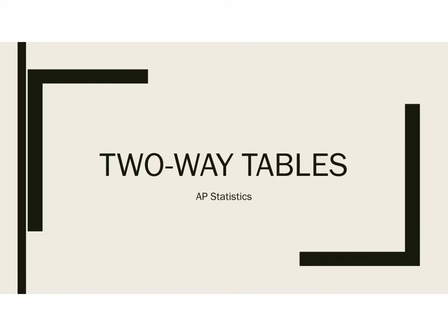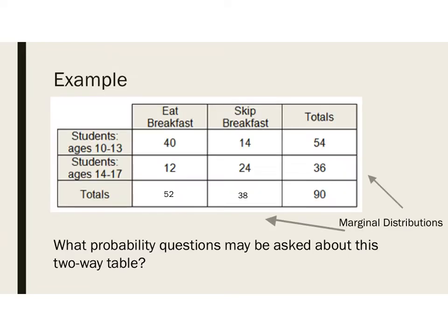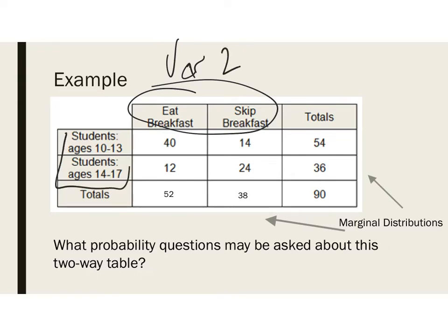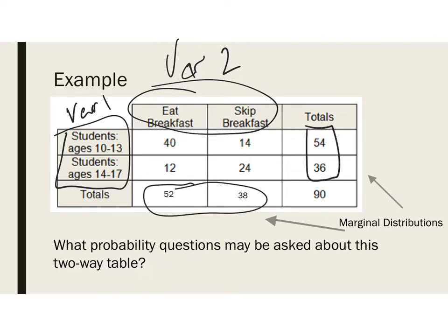Hello again statisticians, back with the second probability lesson — this one's on two-way tables, also known as contingency tables. They look like this, with variable one and variable two. The student's age would technically be the X, and breakfast or no breakfast would be the Y. On the edges we have the marginal distributions — the sums of the rows and columns, like we saw in the chi-square unit — and there are 90 overall individuals in this dataset.